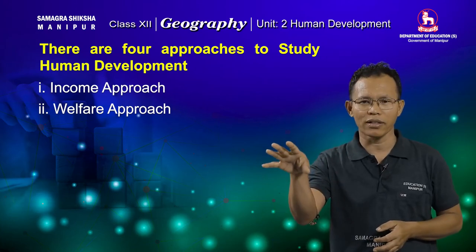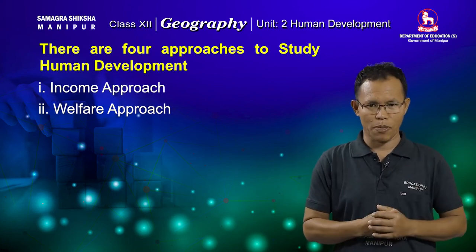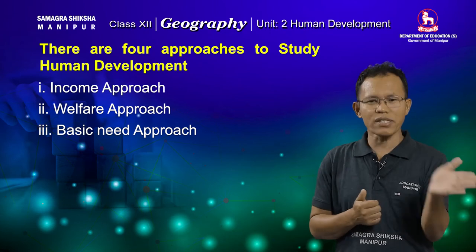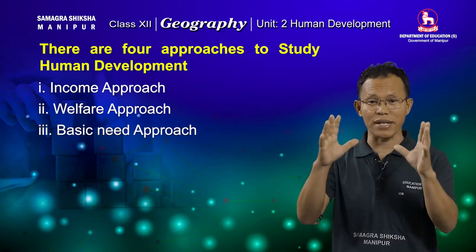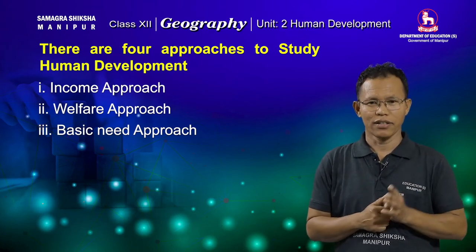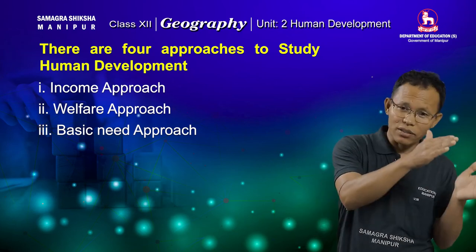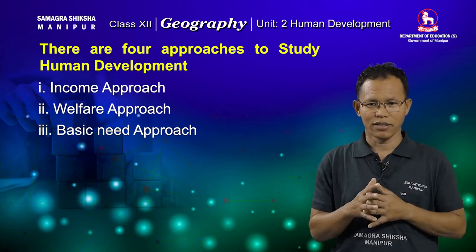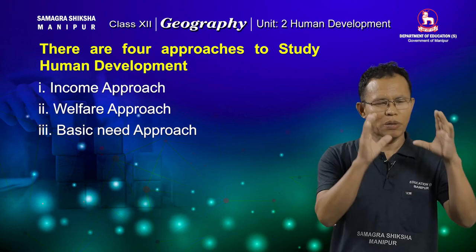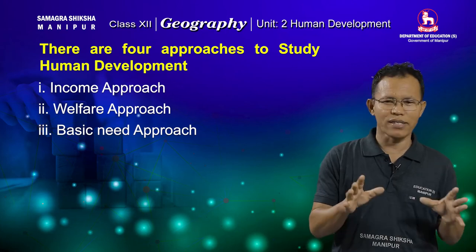The third approach is the basic needs approach. According to this approach, there are six basic needs of the people: health, education, food, water, sanitation, and housing. Human development can be achieved in any country only when the people of that country can fulfill these six basic needs; otherwise, there is no human development.